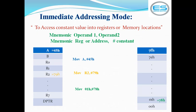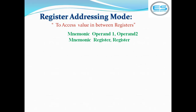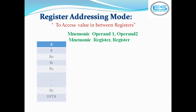The second addressing mode is register addressing mode. This addressing mode helps to access data between registers — both operands in the instruction are registers. This allows sharing data between two registers. For example: MOV R1, A — this instruction comes under register addressing mode, where accumulator is the source and R1 is the destination.